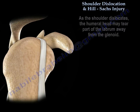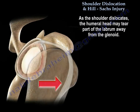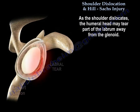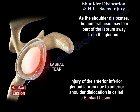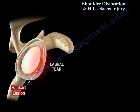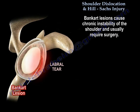As the shoulder dislocates, the humeral head may tear part of the labrum away from the glenoid. Injury of the anterior inferior glenoid labrum due to anterior shoulder dislocation is called a Bankart lesion. A Bankart lesion can cause chronic instability of the shoulder and usually requires surgery.